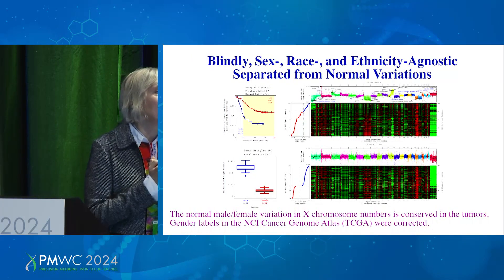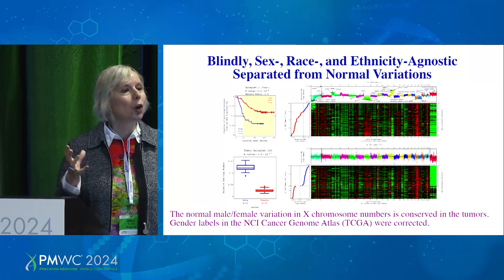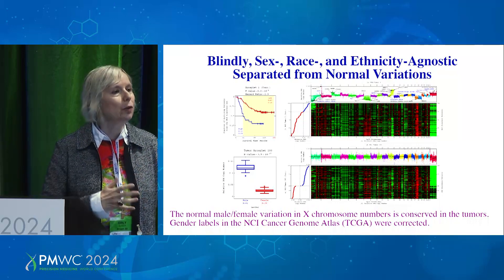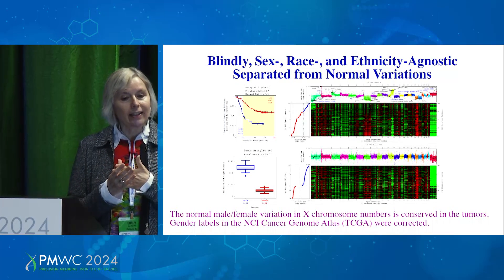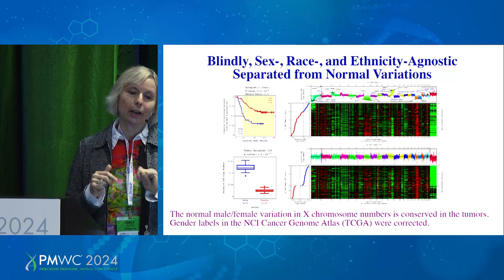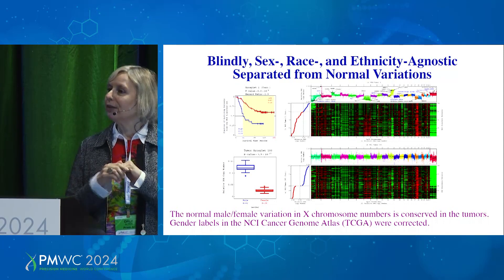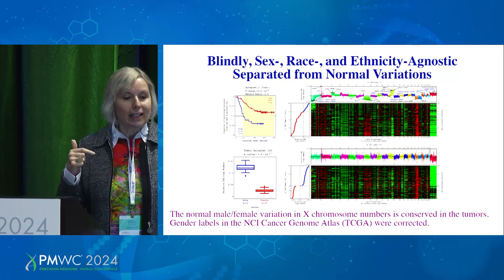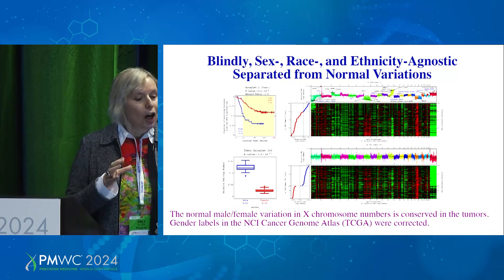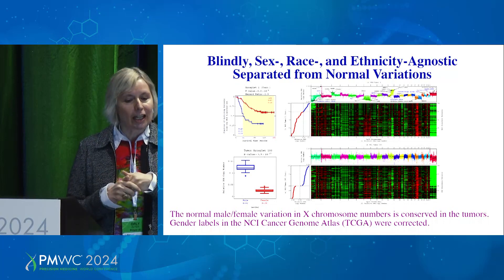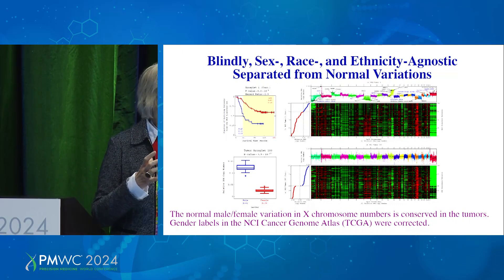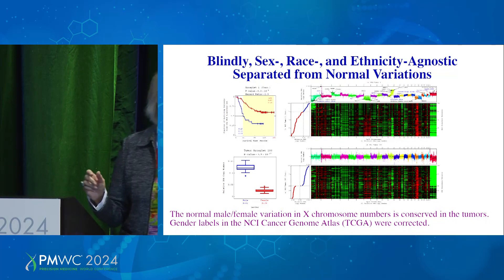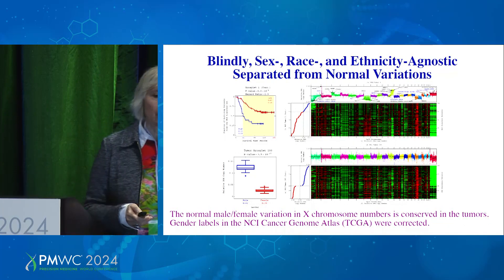Our separation is completely blind. It's agnostic to the normal variations in the data — it is able to separate those normal variations from the disease-specific variations. For example, while we're blind to the sex of the patients, I'm showing you here in the top panel one predictor of neuroblastoma outcome relative to the data it was derived from. And in the bottom panel, we see a separation in the same data of the normal male-to-female variation in X chromosome numbers. It's exactly the same data, and our prism is able to separate them so that we concentrate on the disease-specific biomarkers.